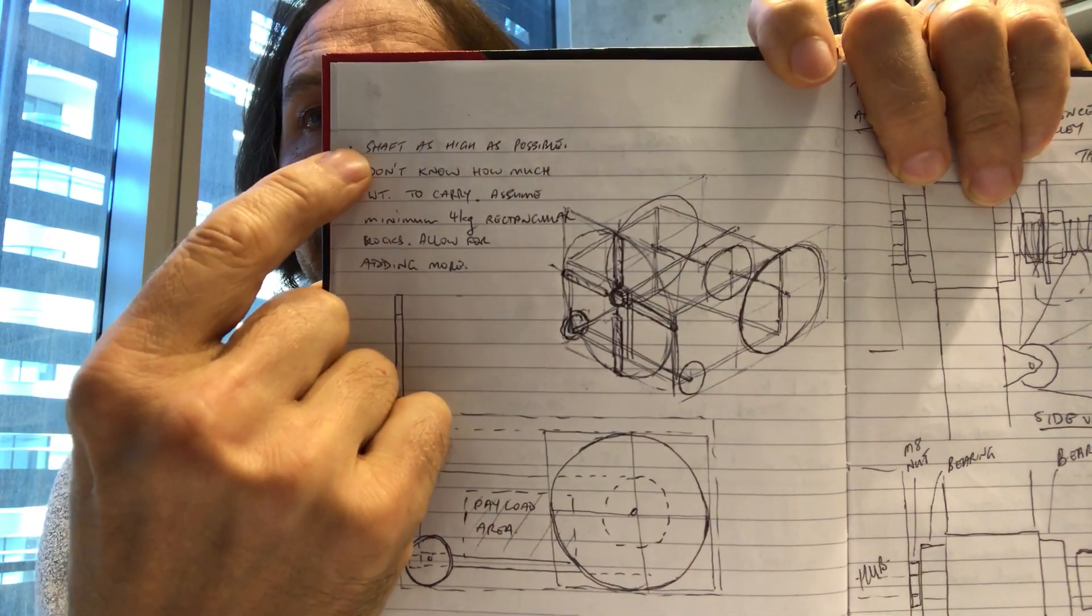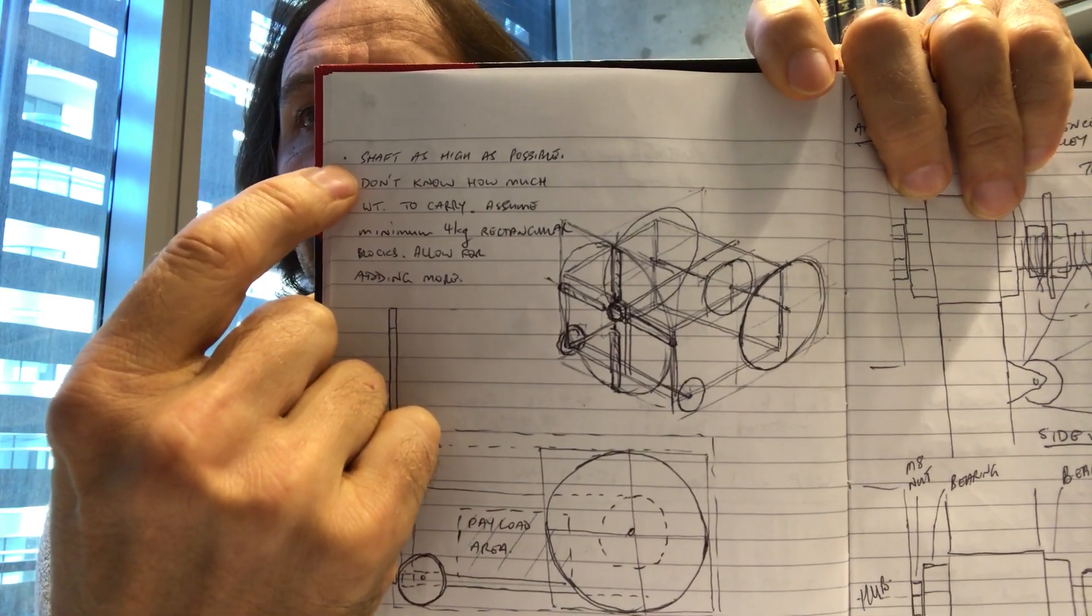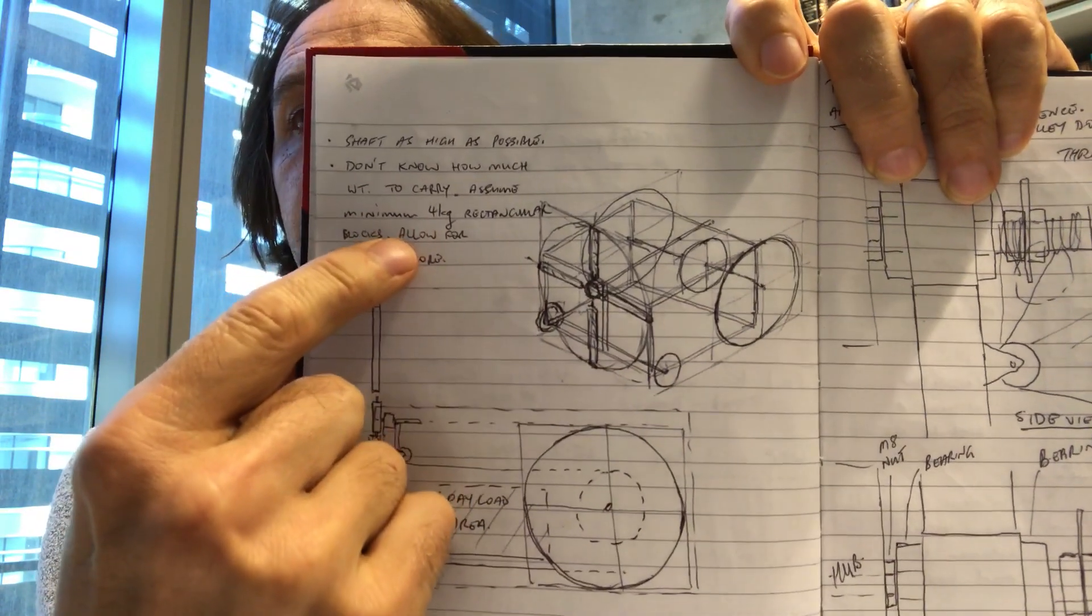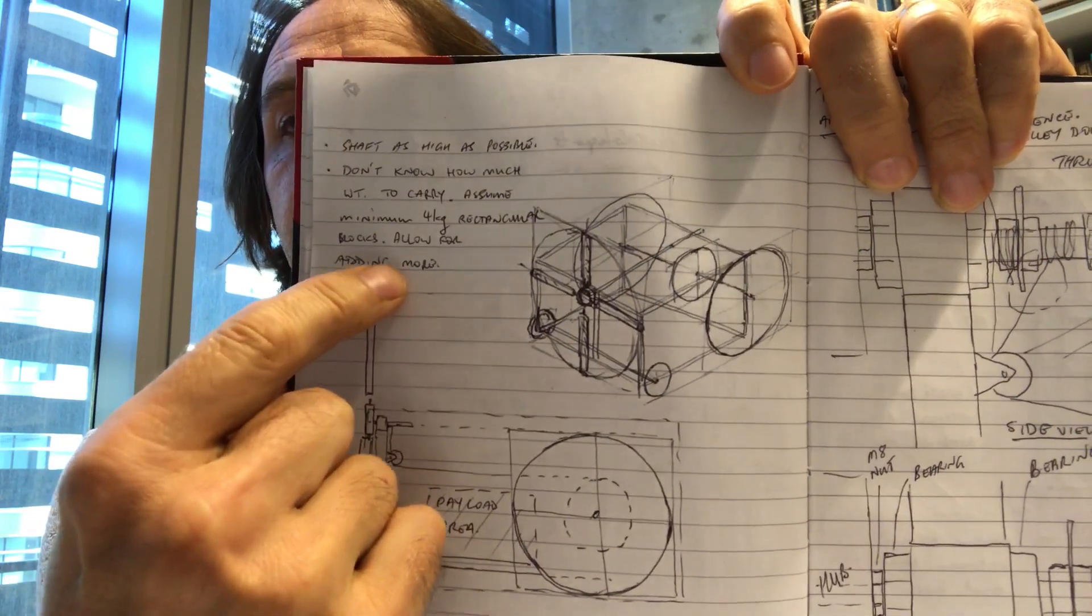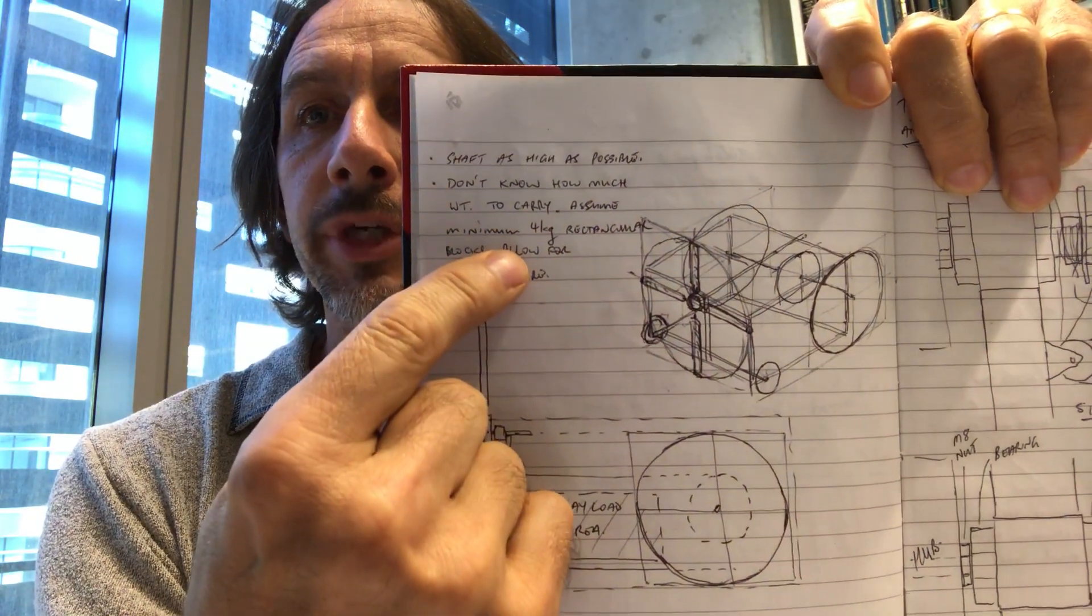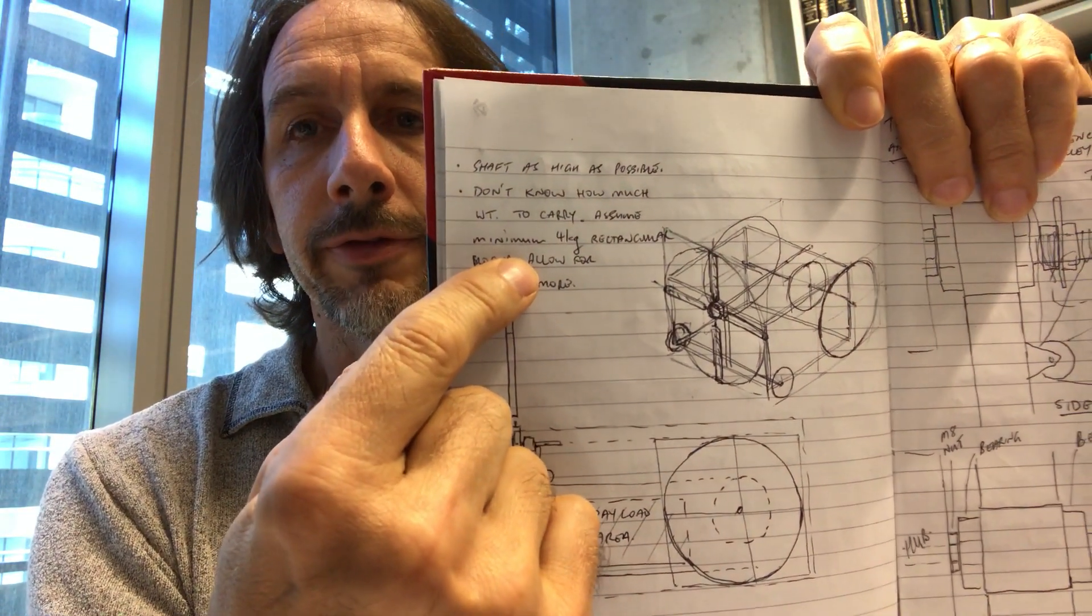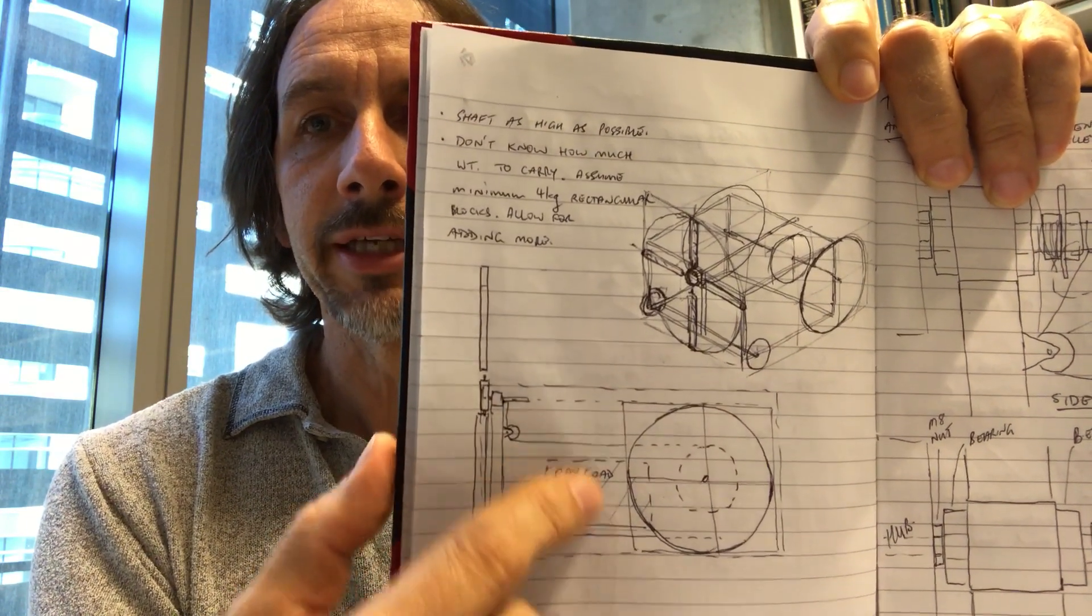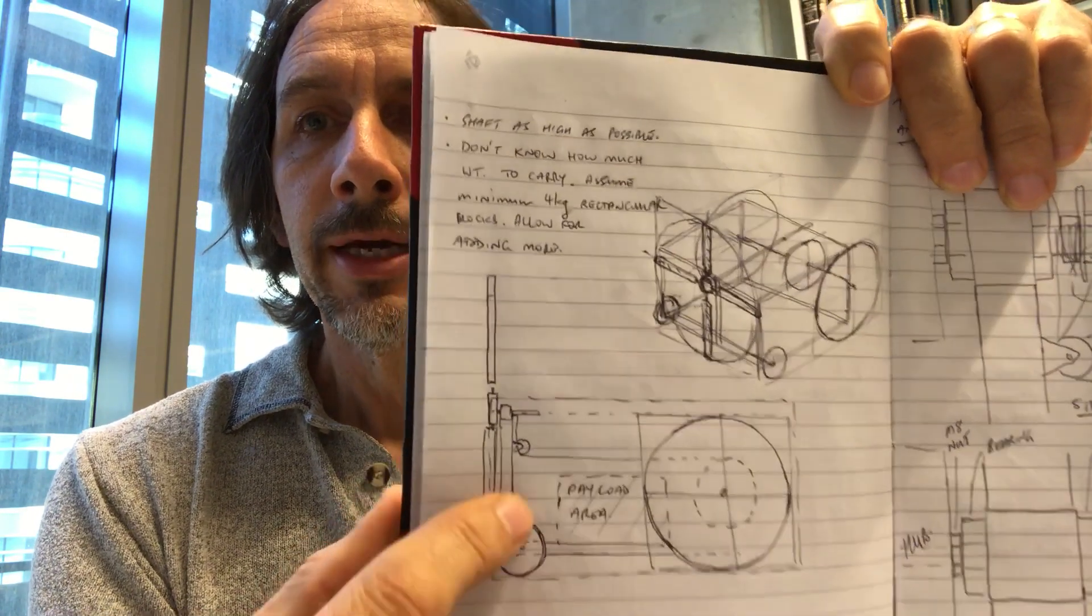The other thing that I've done here with my sketch concept sketch is to write some notes for myself. So one of my ideas is that I want the shaft to be as high as possible so I can make the turbine as big as possible. Then there's a few other things that are noted there. I don't know what payload I'm going to be able to carry, so I've just said okay, I'm going to aim for at least the four kilo rectangular weight to put on my vehicle and I'm going to allow a payload area for that and allow for it to be stacked up.